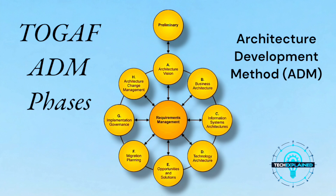Next, we have Architecture Vision, Phase A. This is your big-picture idea, your vision board. For your house, it's sketching out that pool, the robot butler, and maybe a rooftop garden. For businesses, this is where you define what success looks like. It's the high-level plan that answers: what are we building and why? You create a vision document, get buy-in from stakeholders, and make sure everyone's on the same page.